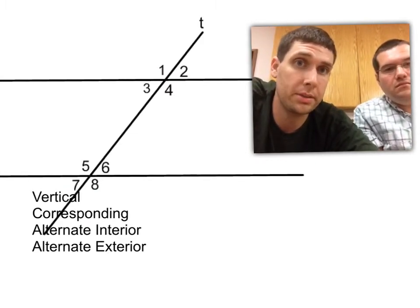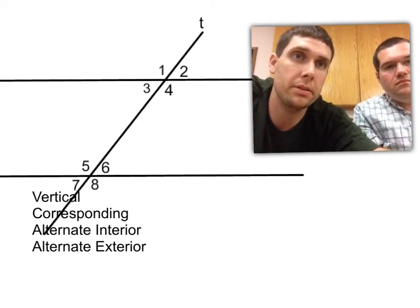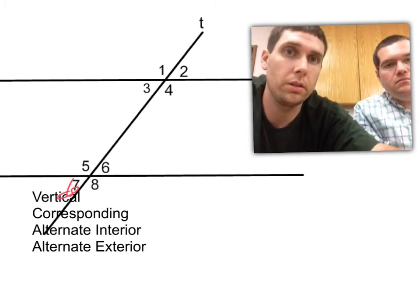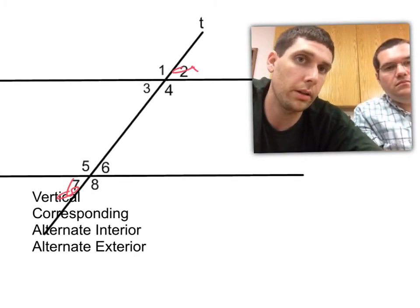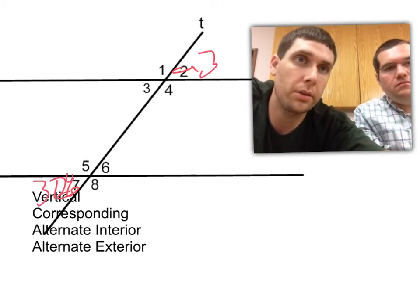Alternate means opposite, so opposite the parallel lines. So 7 outside, opposite, is up here with 2. So we know that angle 7 and angle 2 are congruent. So if angle 7 was 30 degrees, angle 2 would also be 30 degrees.